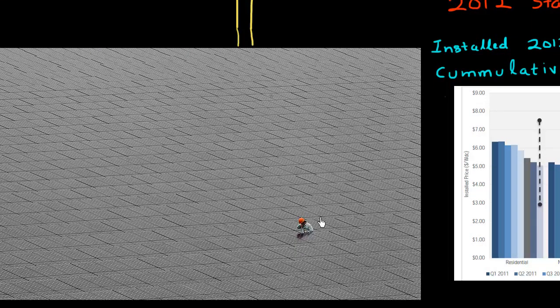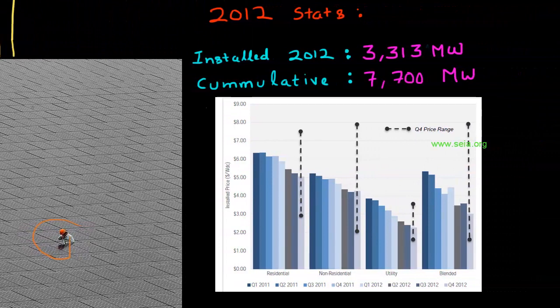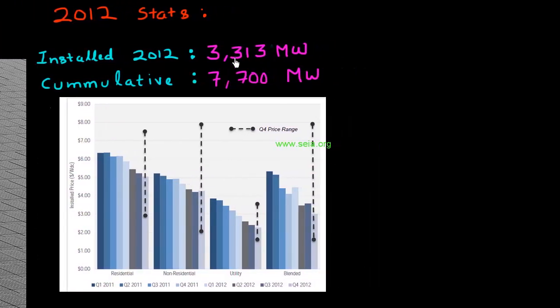Today, these utility scale power plants, which are huge in terms of the area they occupy, are pretty common. To give you some stats on how far we have come from that first silicon based solar cell in 1954, some stats for 2012 are given here. The total installed capacity in USA is over 7 gigawatts as of 2012. The capacity which was installed just in 2012 was over 3 gigawatts, around 3.3 gigawatts.